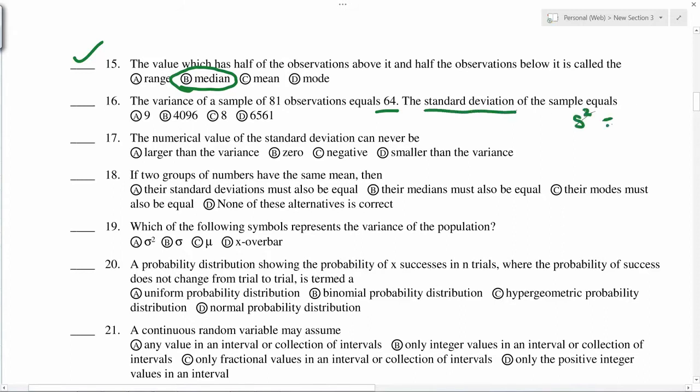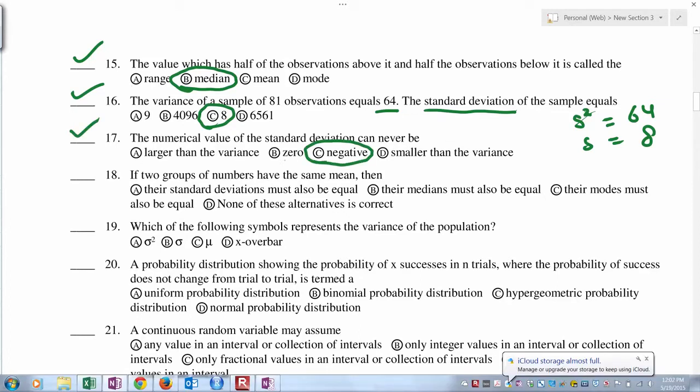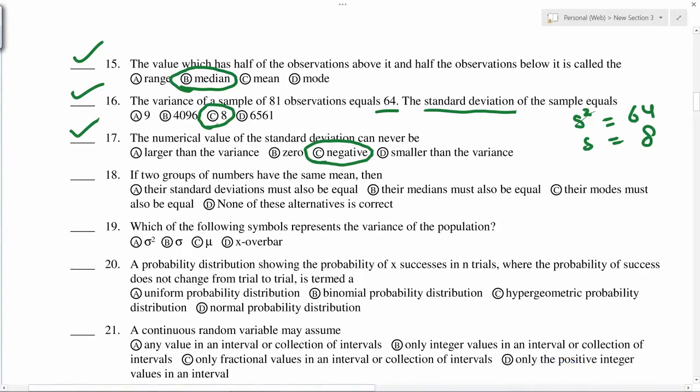If s squared is 64, then s will be 8. Numerical value of standard deviation can never be negative. It can be 0 if all the values are equal, but it can never be negative. If two groups of numbers have same mean, none of these, it can be anything. Variance of population is sigma squared.